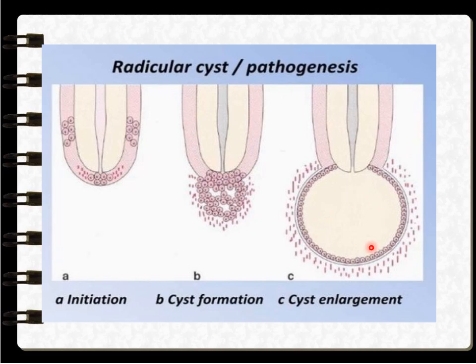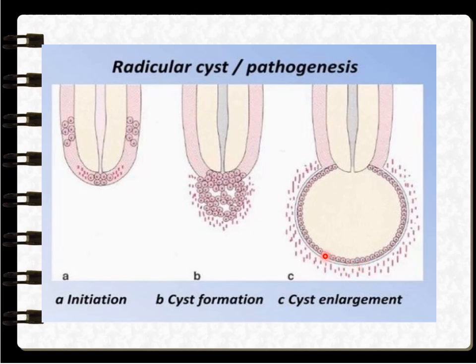Due to liquefaction necrosis, there is an increase in protein content and osmotic pressure. When osmotic pressure increases, fluid from the adjacent connective tissue is drawn in, increasing the fluid content within the epithelial lining. Finally, the cyst enlarges in size.